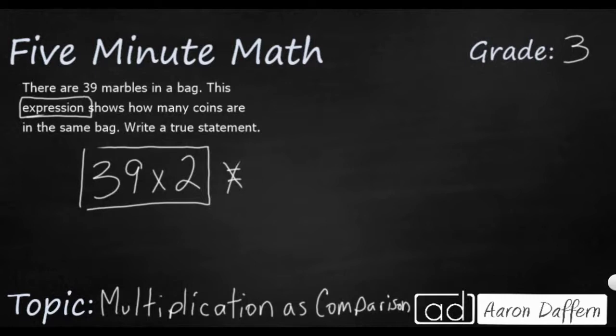So this expression, that's what this is down here, 39 times 2, shows how many coins are in the same bag. So we're supposed to write a true statement where we have a 39 and a 2. And based on what we know of this word problem, this 39, that's going to be the number of marbles. So it looks like the expression shows how many coins. So it looks like this 2 is going to be the number of coins.